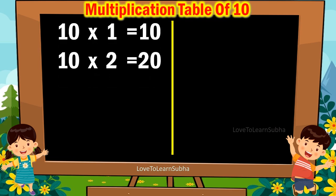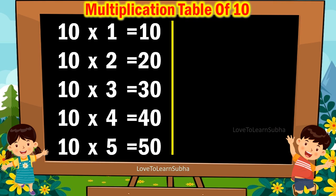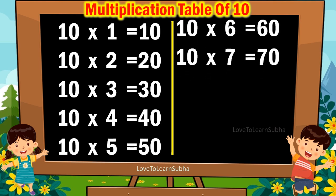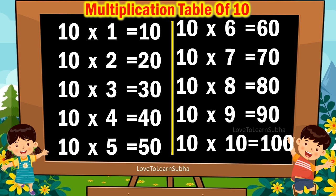Multiplication table of 10. 10 2s are 20. 10 3s are 30. 10 4s are 40. 10 5s are 50. 10 6s are 60. 10 7s are 70. 10 9s are 90. 10 tens are 100.